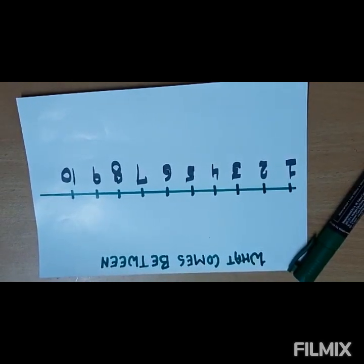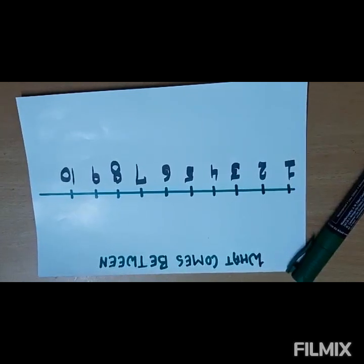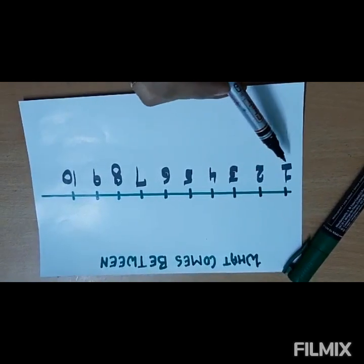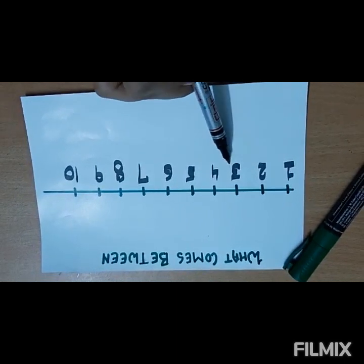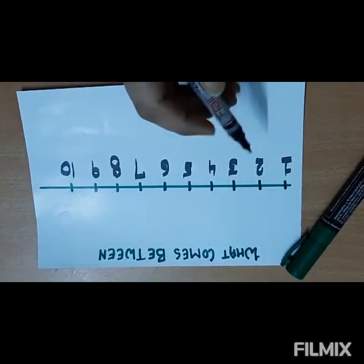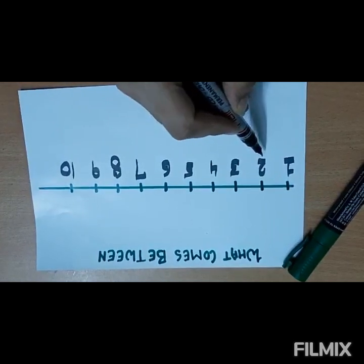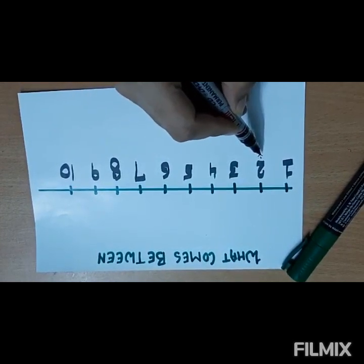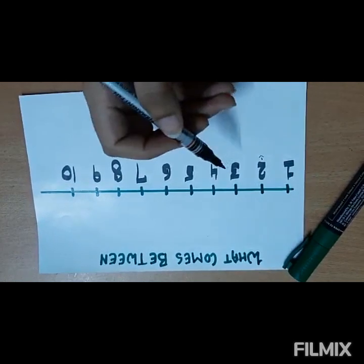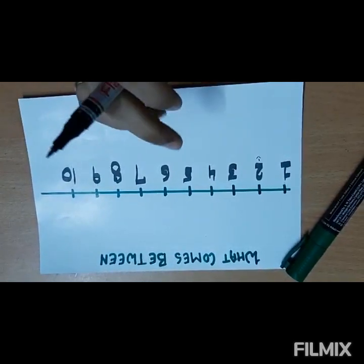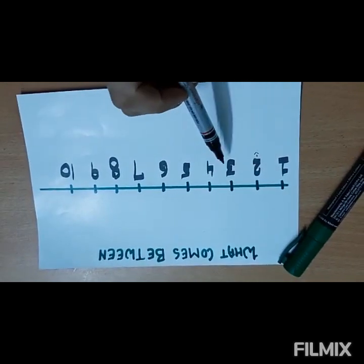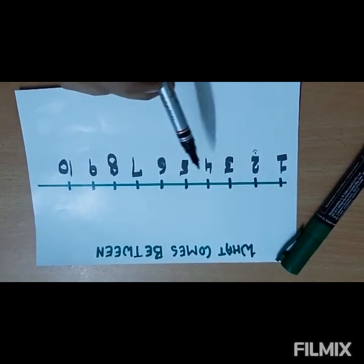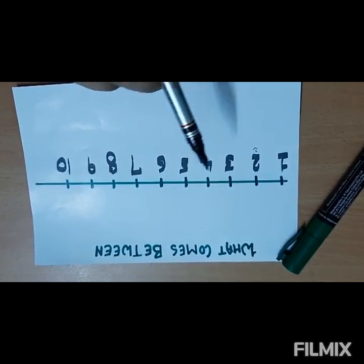For example, if we take these three numbers—one, two, and three—number two will say I come between one and three. It always works in the set of three numbers. It can be one, two, three, or two, three, four, or three, four, five. Every time we will write the number coming in the center.